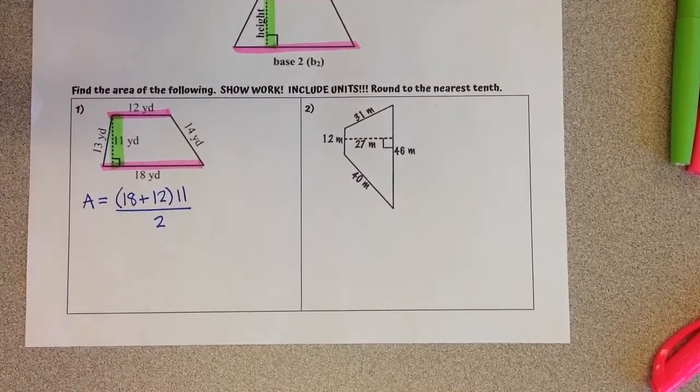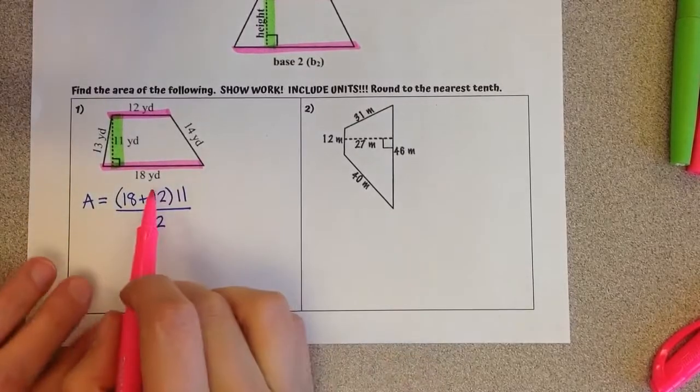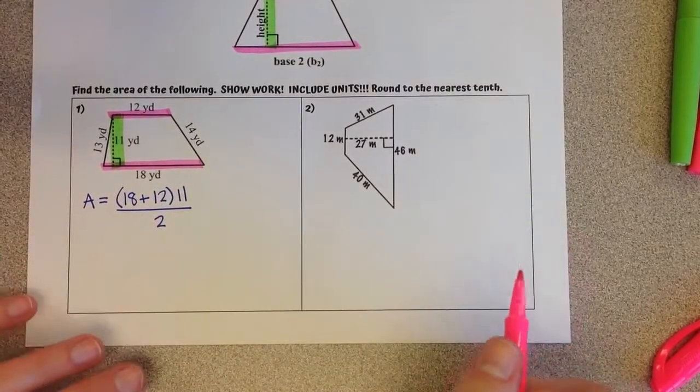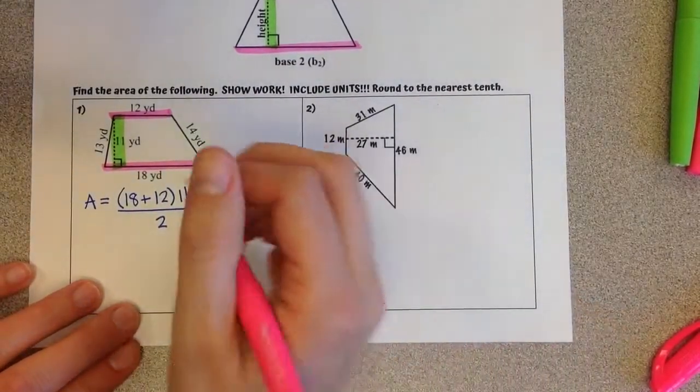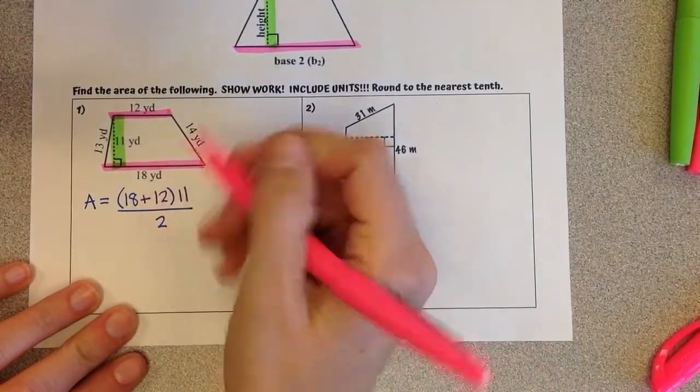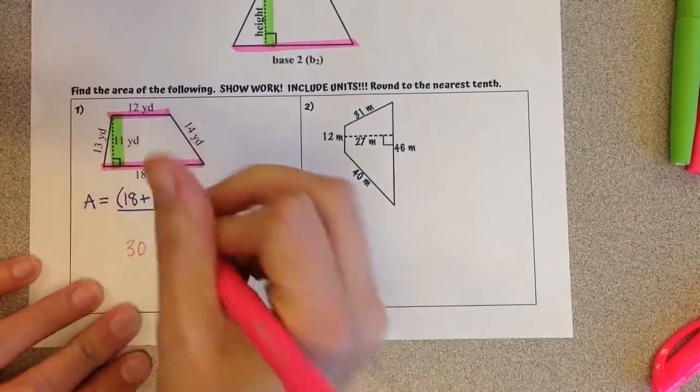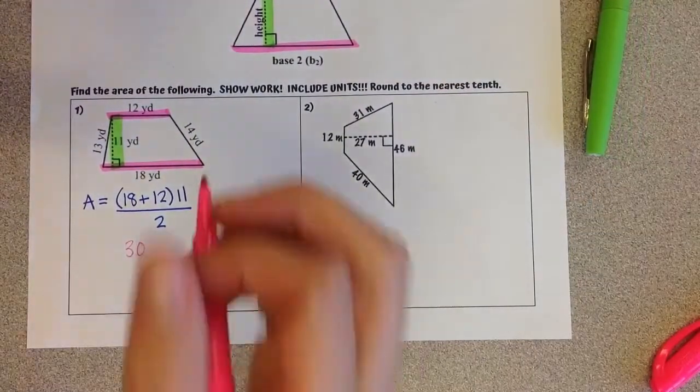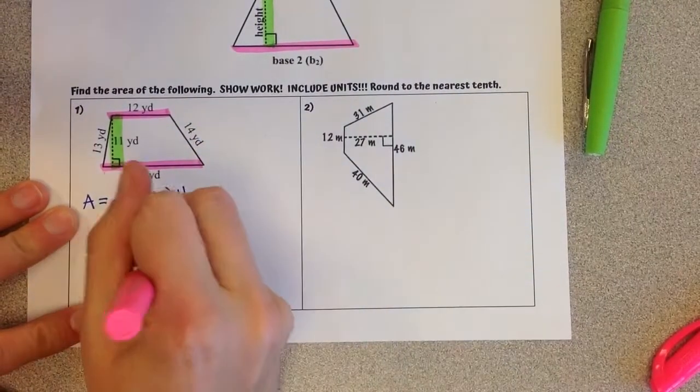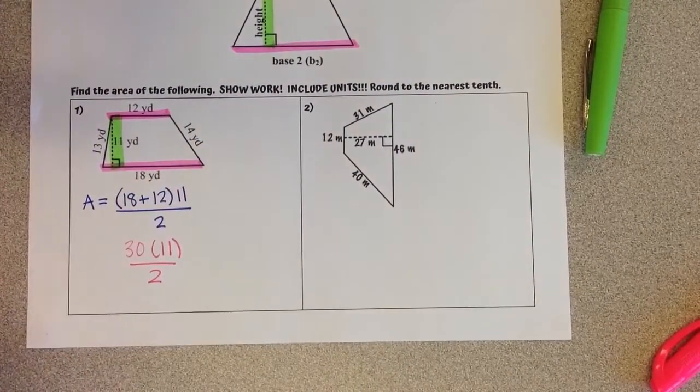First thing we have to do is the parentheses before we multiply. So 18 plus 12 is 30, which we are going to multiply then by our height of 11 and divide by 2.